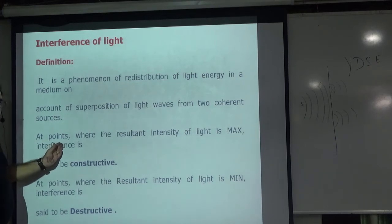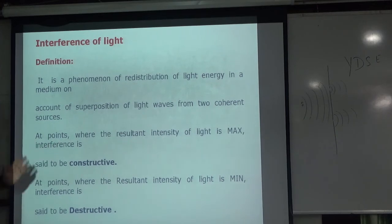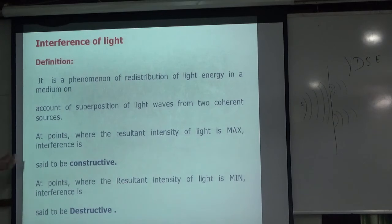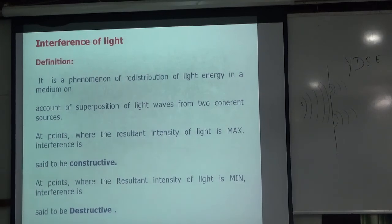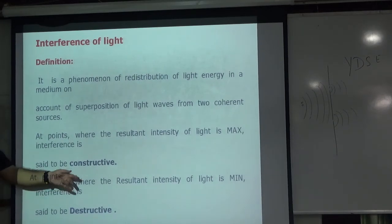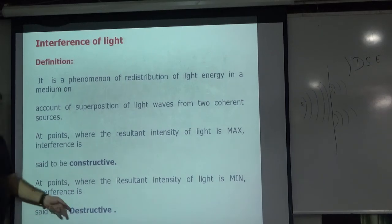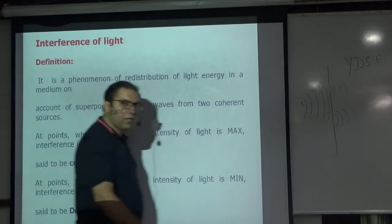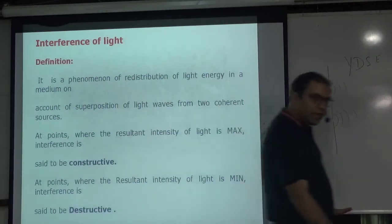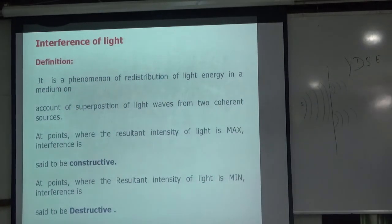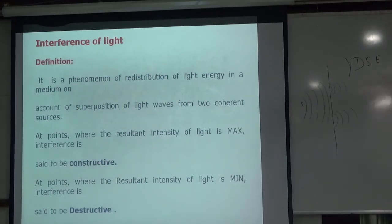At points where the resultant intensity of light is maximum, we say interference is constructive. And at points where the resultant intensity of light is minimum, we say interference is destructive. Is this point clear? Constructive, destructive.